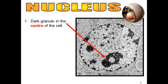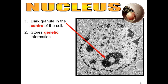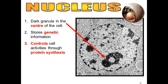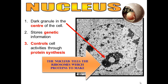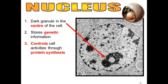The nucleus is the dark center of the cell. It stores the genetic information that you got from your mom and your dad, and it controls everything that happens in the cell. It does this by telling the cell which proteins to make, and that process is called protein synthesis.